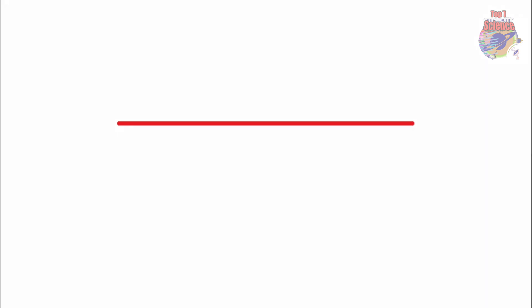Zero Dimension: Any object having zero dimension has no length, no width, and no height. A point is an example of the zeroth dimension, as it has no length, no width, and no height or depth. First Dimension: Any object in the first dimension has only one dimension, that is length. If we connect two points, we get a line having only one dimension. So a line is an example of the first dimension, having no width and no height, but only the length dimension.